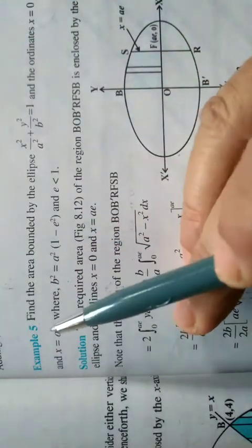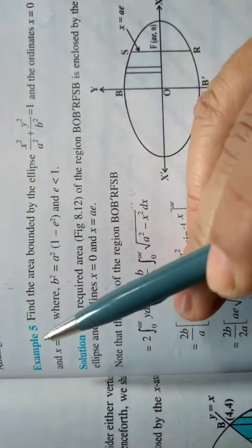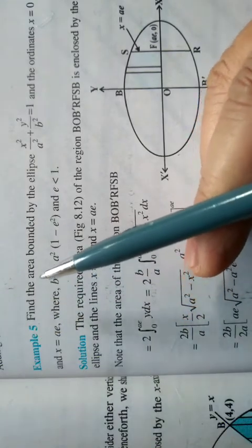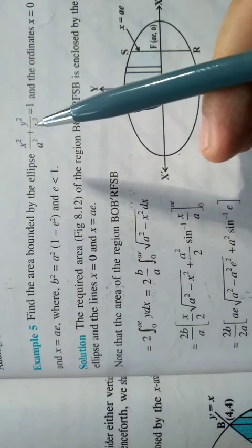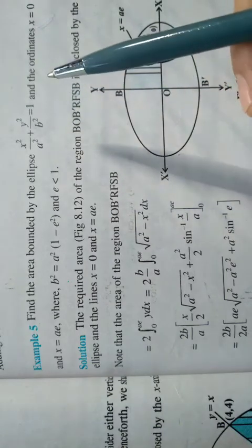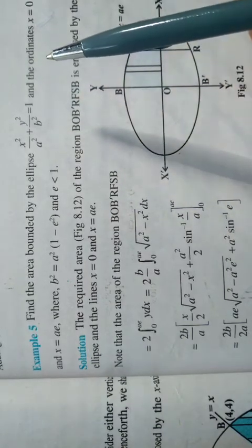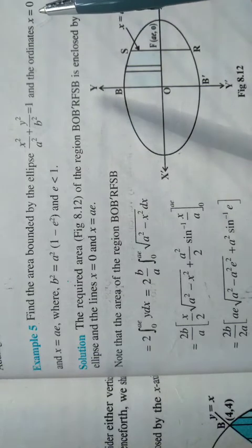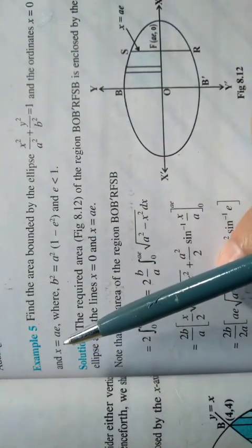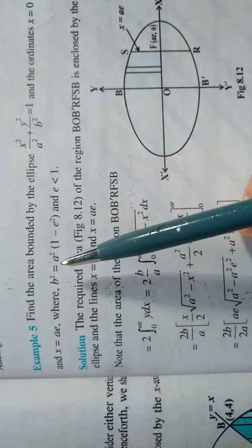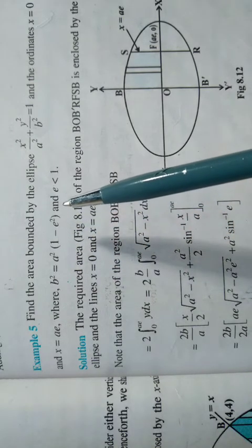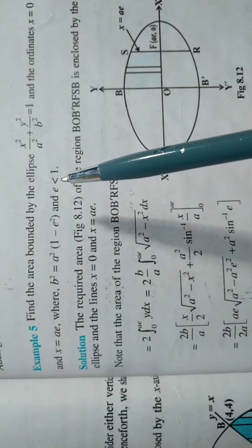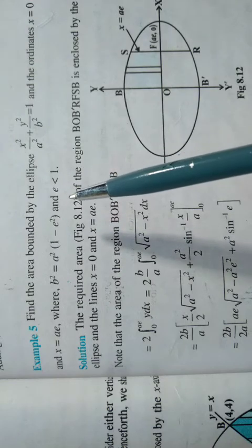Good morning everybody. Let's see for today's class. Find the area bounded by ellipse x square by a square plus y square by b square is equal to 1 and the ordinate x is equal to 0 and x is equal to ae, where b square is equal to a square into 1 minus e square and e is less than 1.